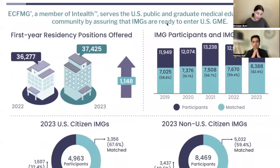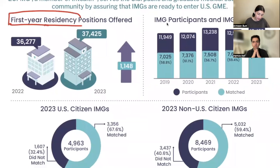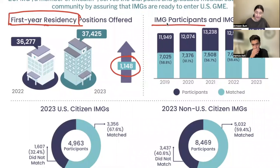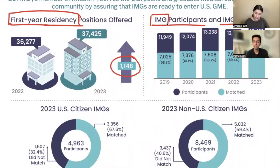For IMGs, we can see the first year residency positions offered — American hospitals are offering more positions, with about 1,150 more than the previous year. Looking at IMG participants and those matched, for IMGs overall in 2023, there were about 13,432 applicants from both US IMGs and non-US IMGs, of which around 62.4% were matched.